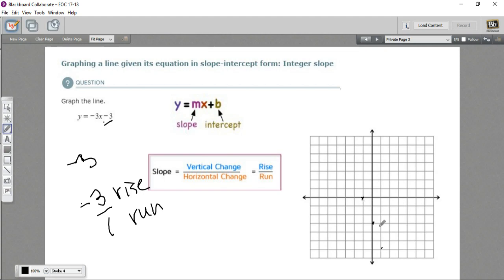So from point to point here, we go down 3 over 1, down 3 over 1. And then we have enough points we can draw our line. So let's do that. And there is our line.